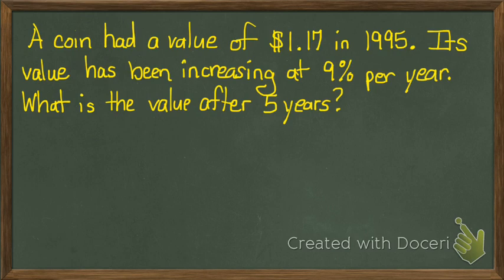Let's write down the information that we already know. One thing that we know is the initial amount, basically the amount that we started off with, which is P, and that is a dollar and 17 cents.